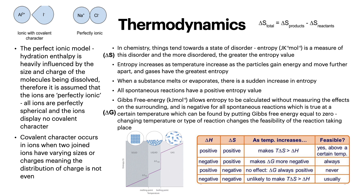Gibbs free energy allows entropy to be calculated without measuring the effects of the surroundings, and is negative for all spontaneous reactions, which is true at a certain temperature that can be found by putting Gibbs free energy equal to zero. Changing temperature or type of reaction changes the feasibility of the reaction taking place. You can see in the diagram how entropy changes with each state change, and there's also a table that clarifies the relationships between Gibbs free energy and enthalpy.